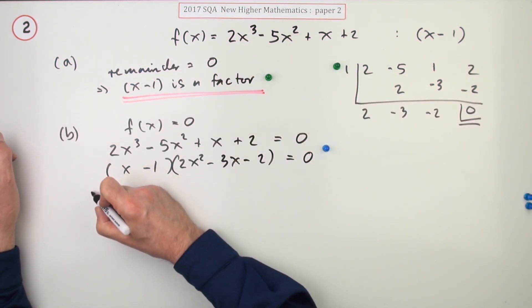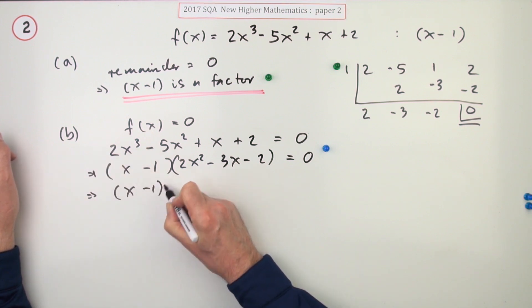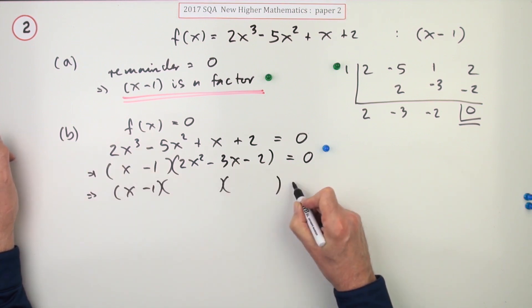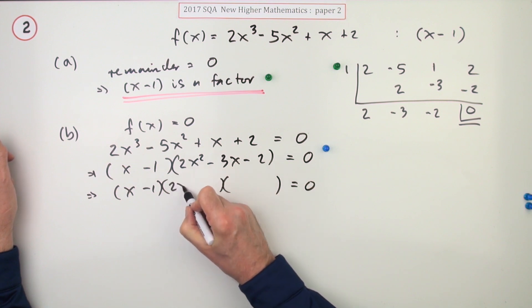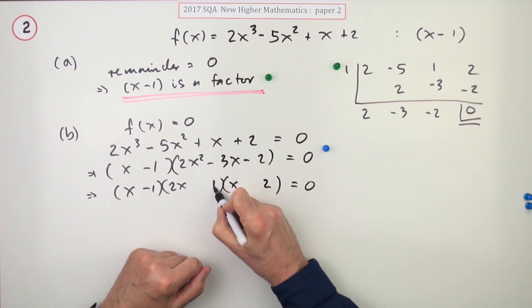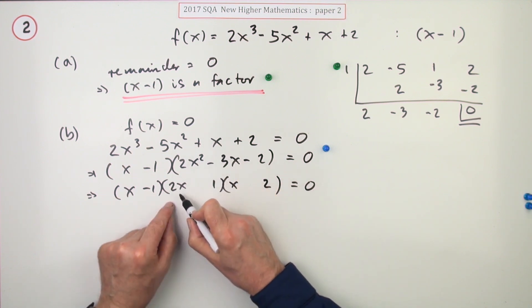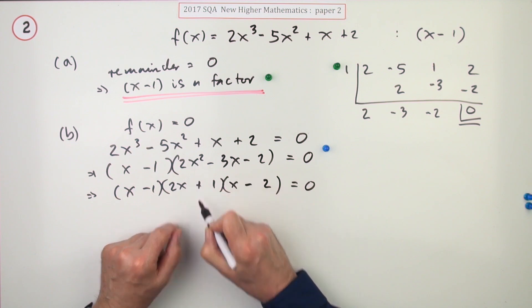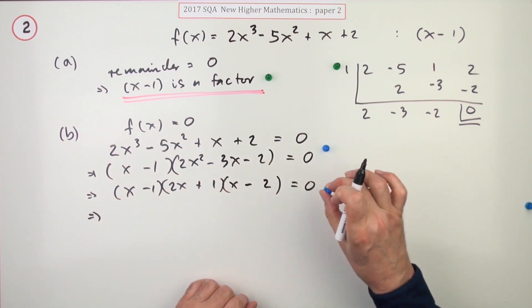Now you have to factorize this part by yourself, though. So x minus 1 times... 2x squared can only be a 2x times an x. 2 can only be a 1 times a 2, a difference of 3. We'll have to put the 2 there - there's a 4. Middle term's negative, so the larger one must be negative, so that's the plus. 1 mark for the factorization.